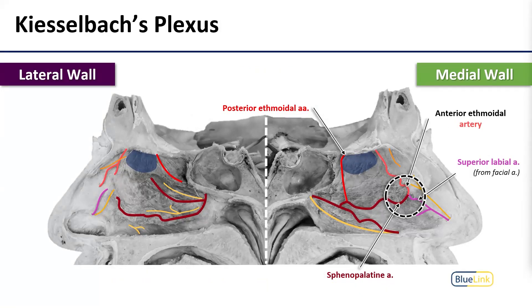Finally, there is an anastomosis between the three arteries that supply the septum — the anterior ethmoidal, the superior labial, and the sphenopalatine artery. This interconnection is called Kiesselbach's plexus and it sits fairly anteriorly on the septum. We need a large blood supply here to warm and moisturize incoming air, and Kiesselbach's plexus does a lot of heavy lifting in that regard. Because of its anterior positioning — right where a finger can scratch — it is also a very common site for anterior nosebleeds.